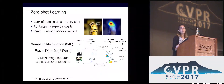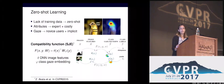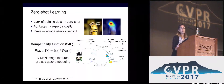We suggest that the annotator doesn't need to name the attributes, and it's enough if they gaze through the image. It's implicit and can be done by novice users. We argue that gaze data is class discriminative, and we learn a compatibility function between image features and gaze embeddings.